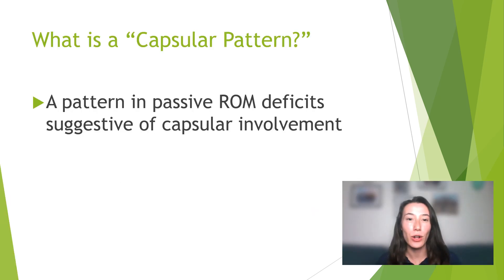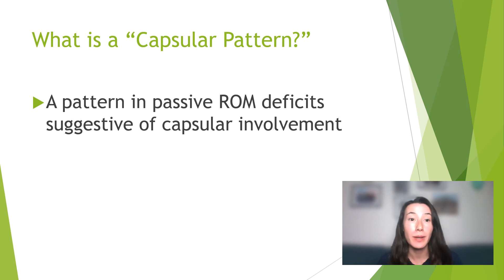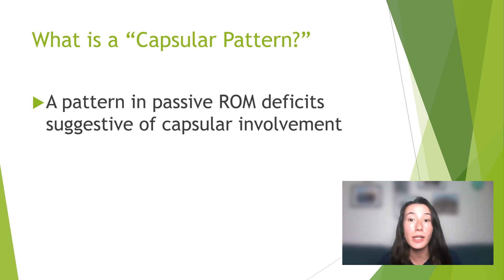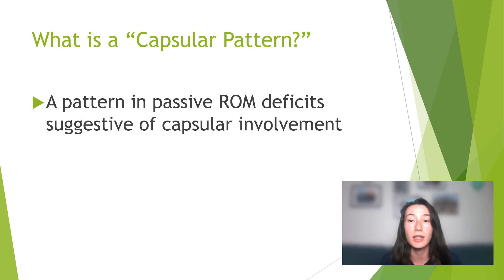So first of all, what is a capsular pattern? Well, this is a pattern that we would find with respect to passive range of motion deficits that might occur if a person's joint capsule is involved. It could be irritated, it could be thickened, or really just anything that deals with the joint capsule.